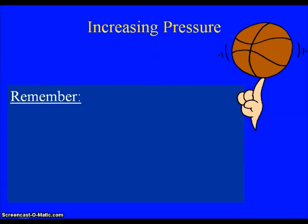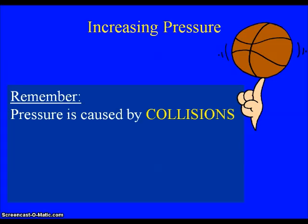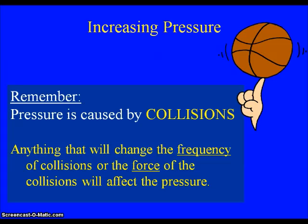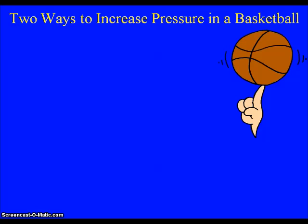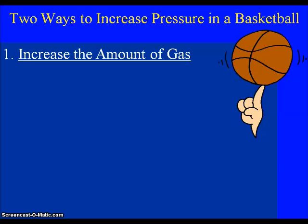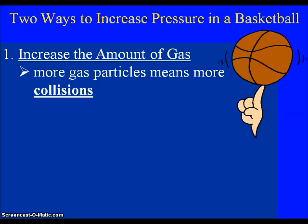That was a good illustration of the particles. When talking about pressure, remember: pressure is caused by collisions. You saw the particles colliding with the wall of the basketball — that's a good image to keep in mind. Anything that changes the number of collisions per second, or the frequency of collisions, or the force of each collision, is going to have an impact on the pressure. We saw two ways to increase the pressure of the basketball. Normally, if a basketball is not bouncing well, you pump more air in — you're putting more gas particles into the basketball, which means more collisions and greater frequency of collisions.